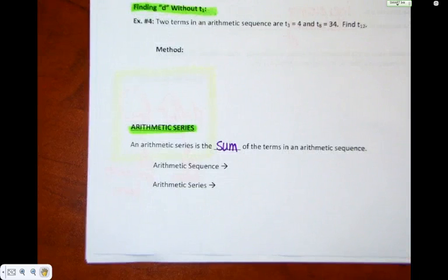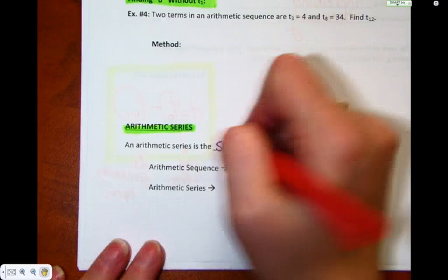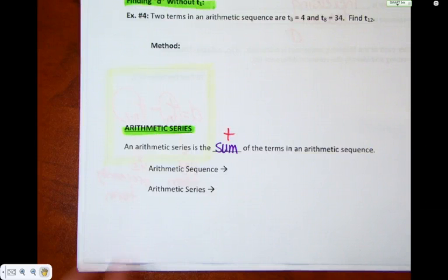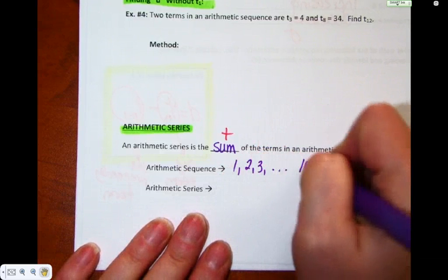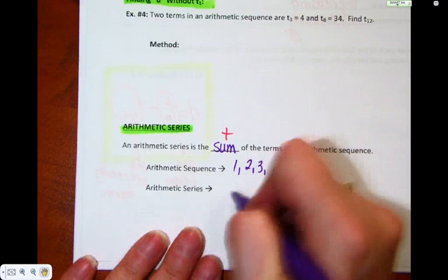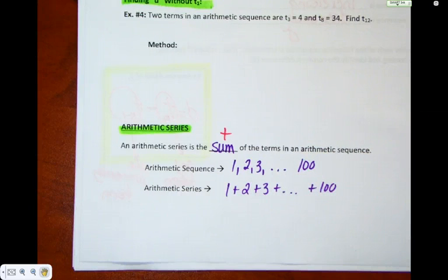An arithmetic series is the sum of the terms in an arithmetic sequence. What does sum mean? We add it all up. So an arithmetic sequence, an example could be 1, 2, 3 up to 100. An arithmetic series would be 1 plus 2 plus 3 up to plus 100. What's the difference between a series and a sequence? Series has the plus signs. If it's a sequence, there's no plus signs, there's just commas. If it's a series, there's plus signs.